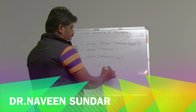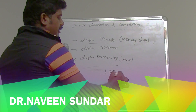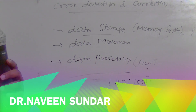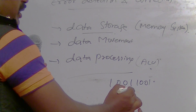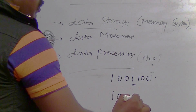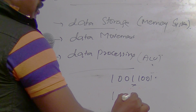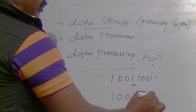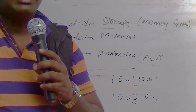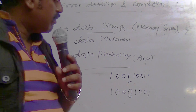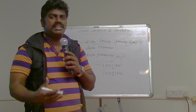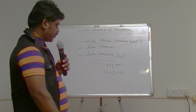For example, consider an 8-bit data being transferred from one location to another. If the fourth bit is getting an error — for instance, instead of 1 it becomes 0 — then that particular bit has an error. At the receiver end we have to find out which particular bit got an error, detect it, and correct it. That is the process we are going to use.